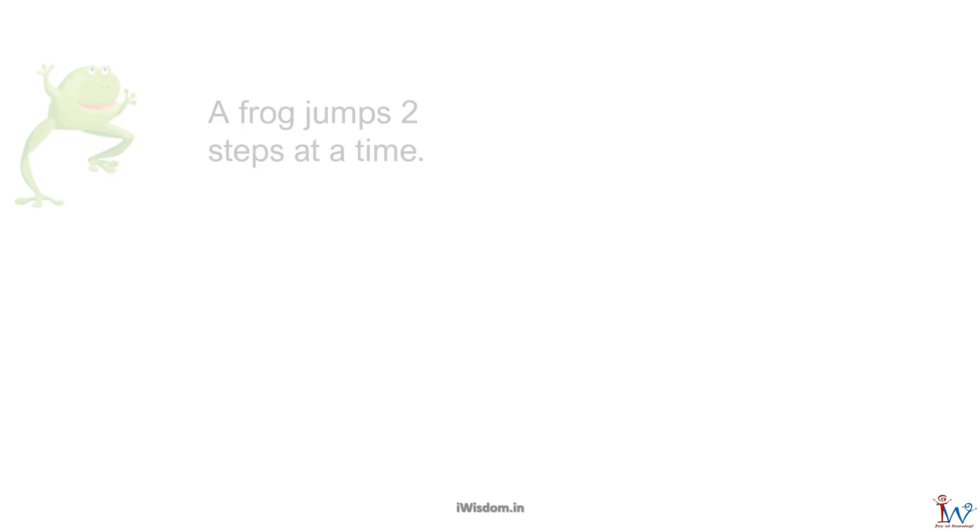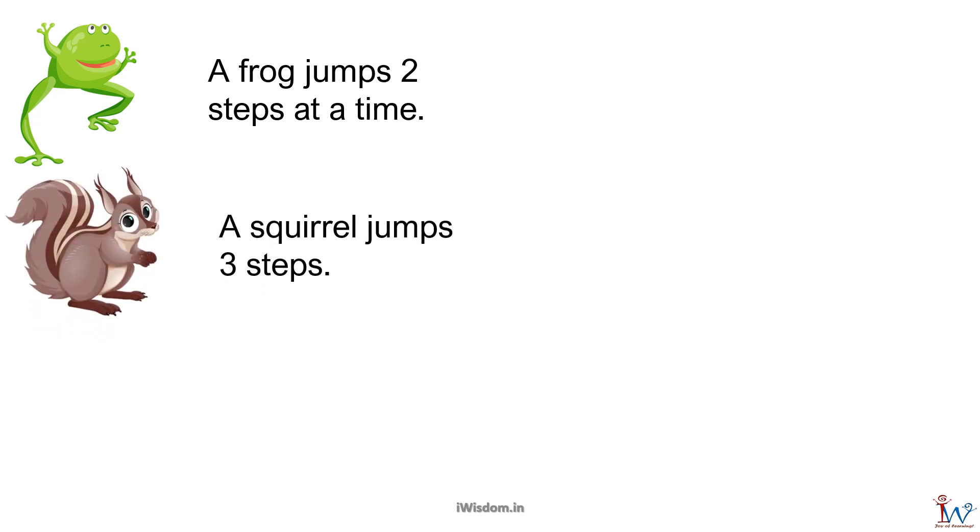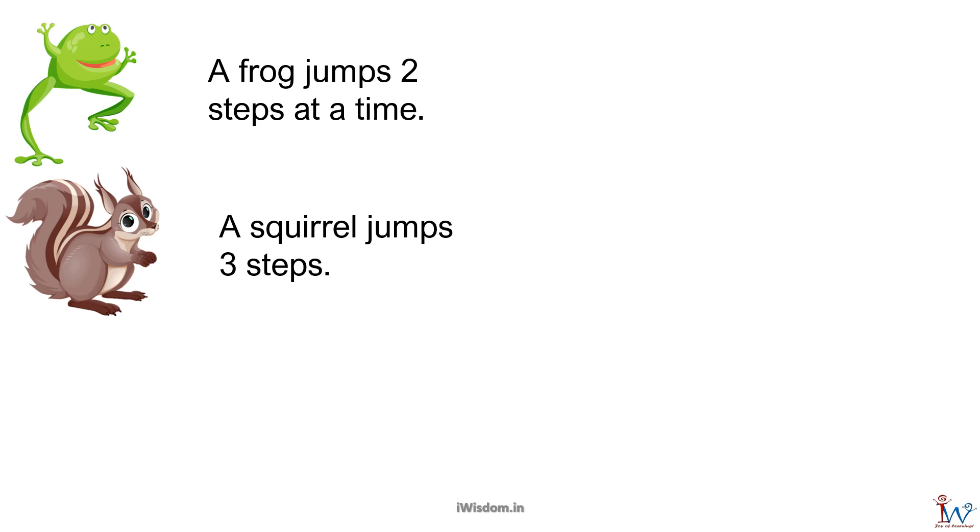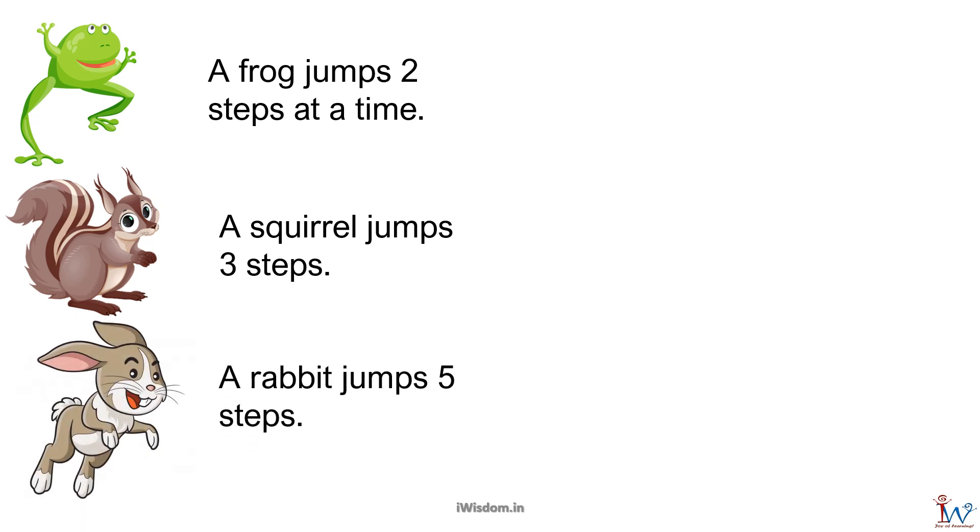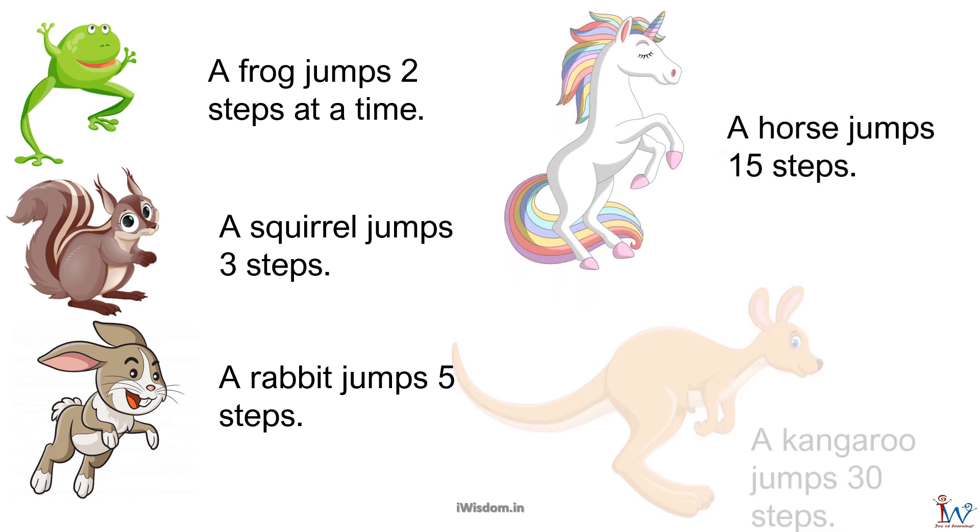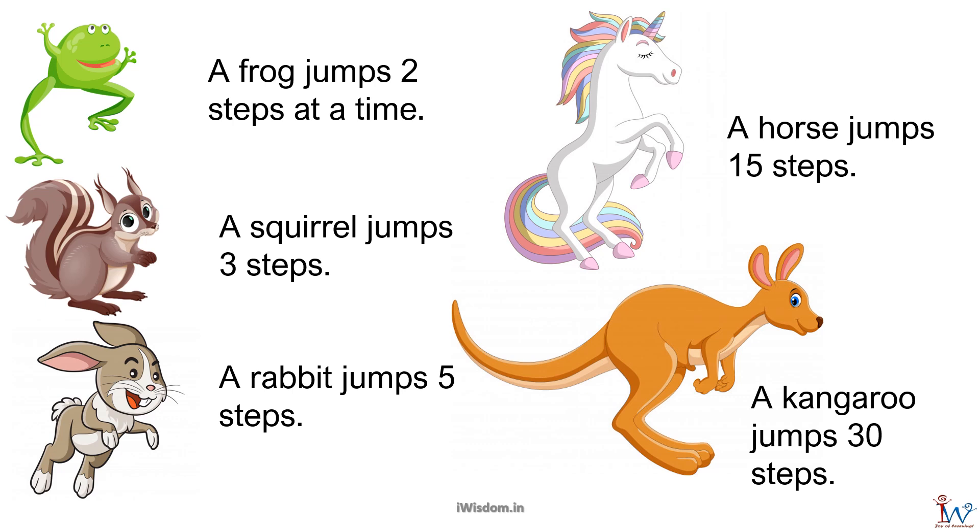Here is the list of animals who jump. A frog jumps 2 steps at a time. A squirrel jumps 3 steps. A rabbit jumps 5 steps. A horse jumps 15 steps. A kangaroo jumps 30 steps. Based on the above information, answer the following questions.